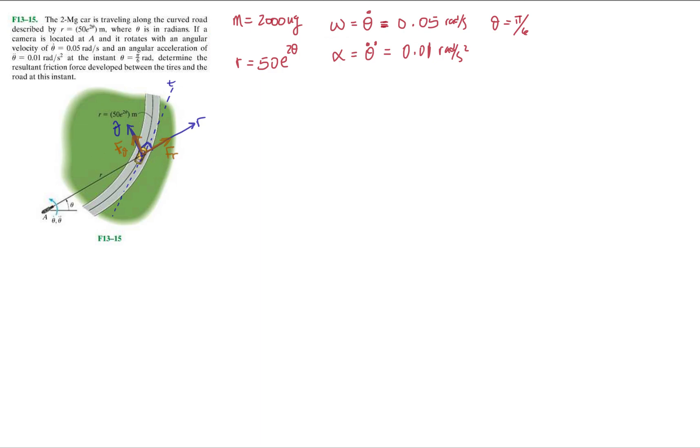How do we get a resultant? Well, it's very easy. We just do, all we do is, you know, in a F of x, F of y system, all we do is this, right? And that gives us our resultant. Okay, so same thing applies for this. We're gonna do F of theta squared plus F of r squared, and that'll give us the resultant force that we're looking for. There's also friction force developed between the tires and the road at this instant. Okay, so that's what we need to find.